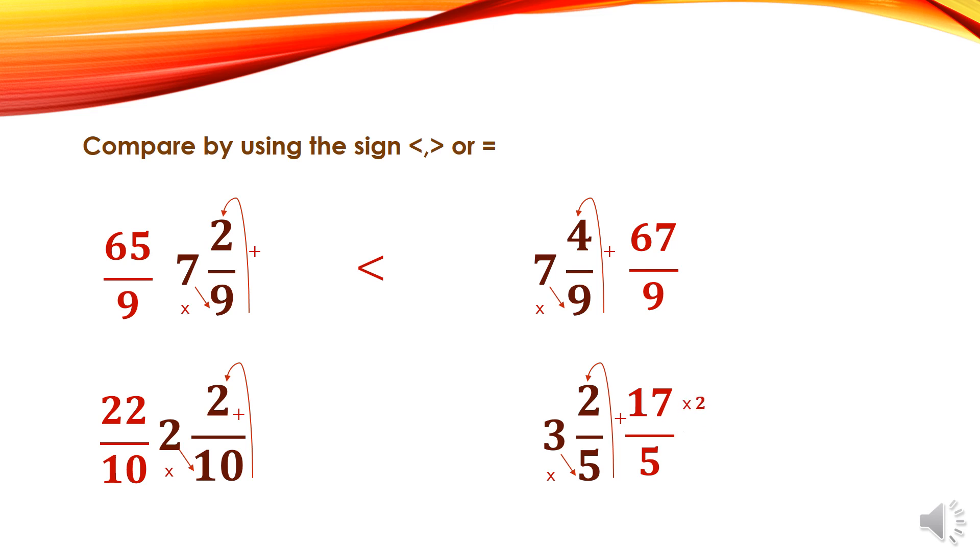But don't forget, if I multiply down by 2, I will multiply up by 2 also. Then 17 times 2 equals 34 and 5 times 2 equals 10. Now I have 22 over 10 and 34 over 10. Can I compare? Yes, of course, 22 over 10 is less than 34 over 10.